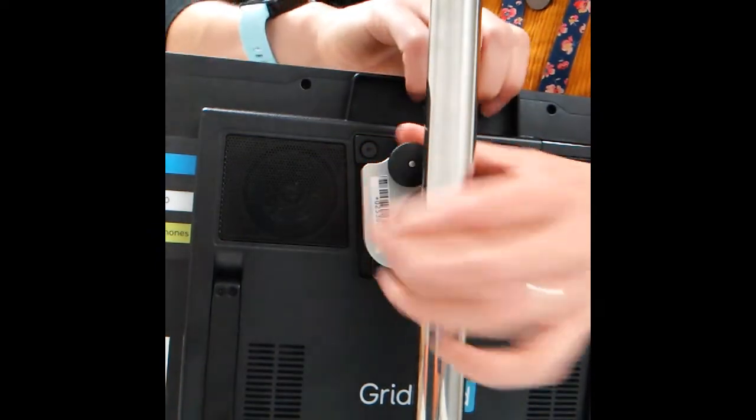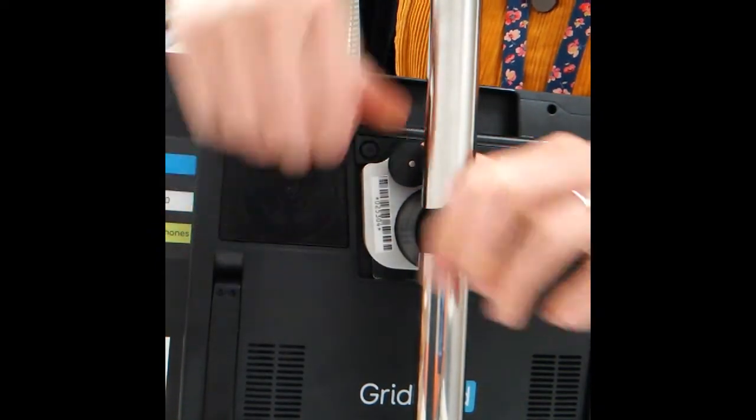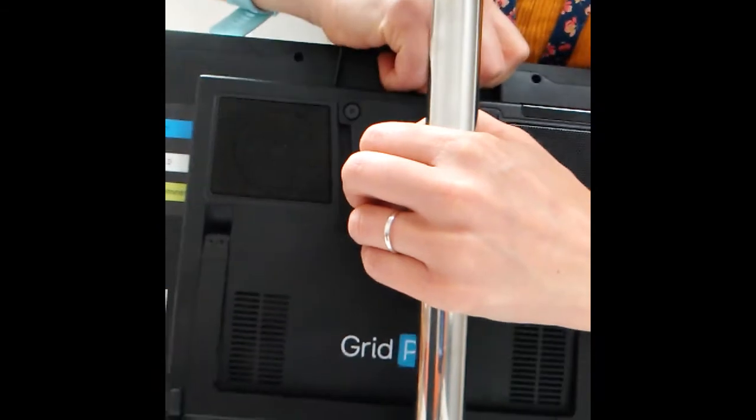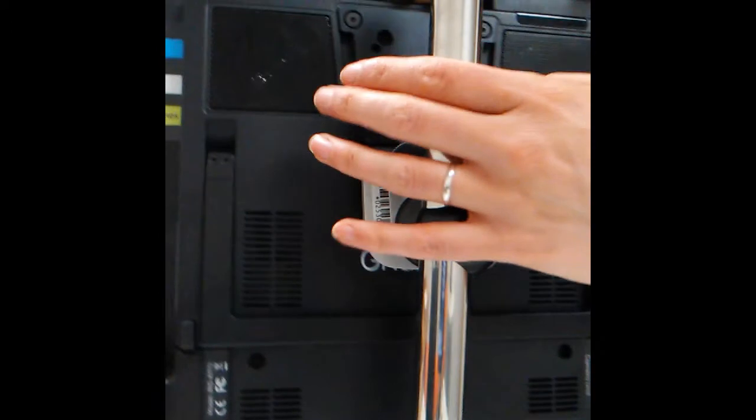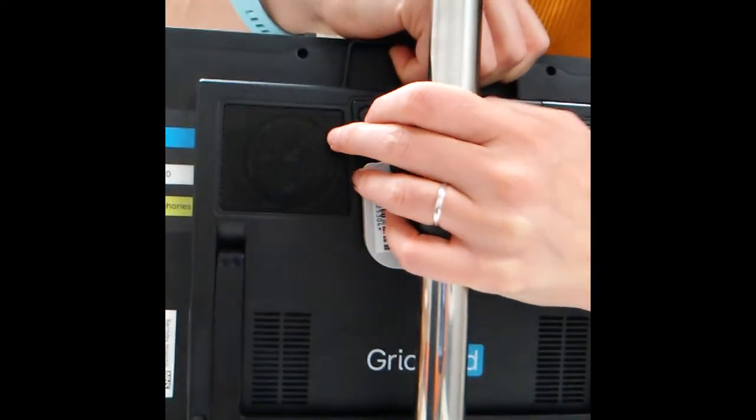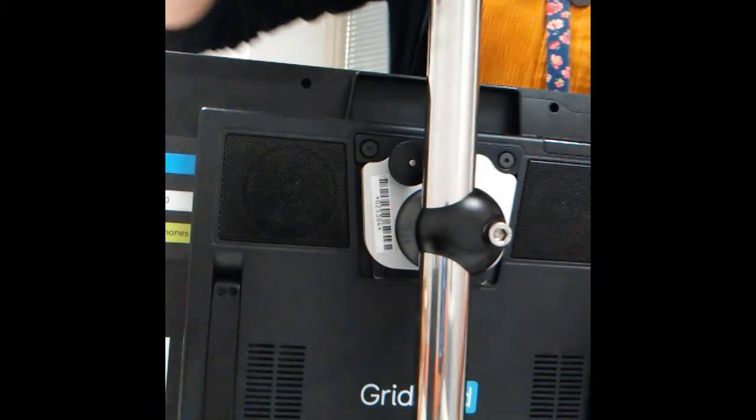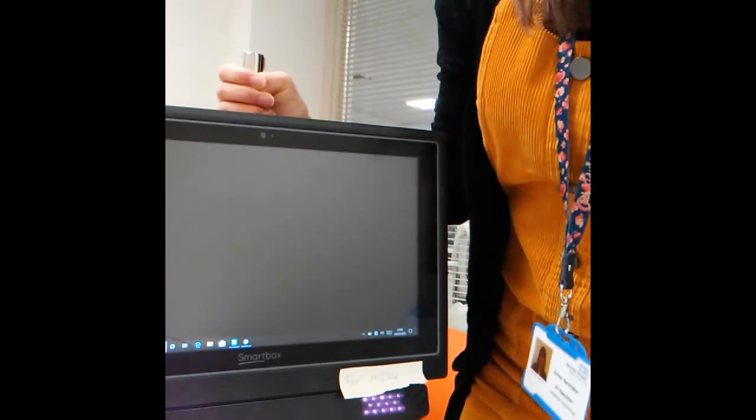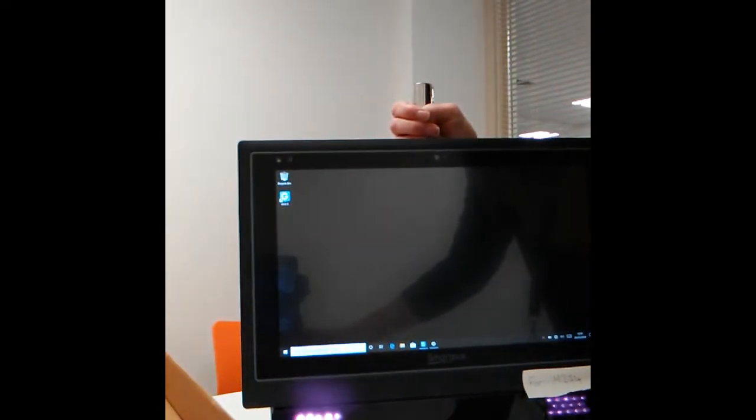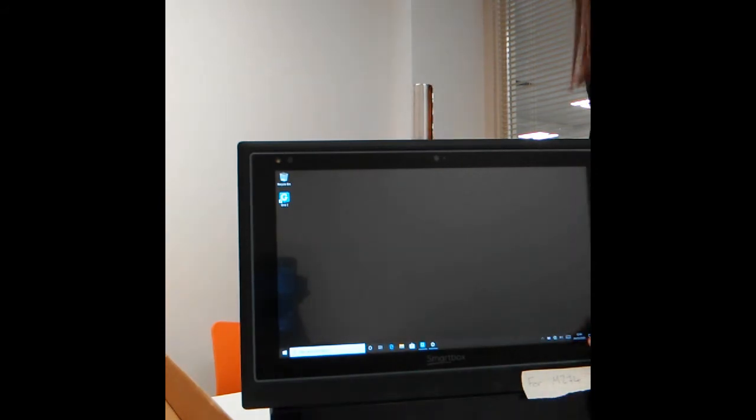And then to take it off you do the same again. So you pull out this pin and then just slide the device off again. Okay. Like so. And then you should be able to turn it round. It should be ready to go on your desk stand. So again, if you needed to make the device higher or lower, you could adjust it based on the quick release.